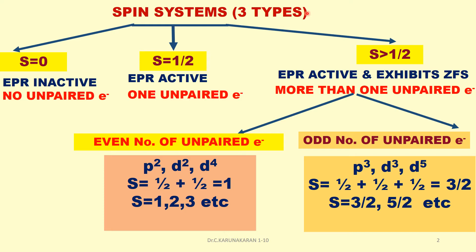There are three types of spin systems. One is S equal to zero — no unpaired electron, so it is EPR inactive. Next is S equal to one by two — only one unpaired electron, and it is EPR active.